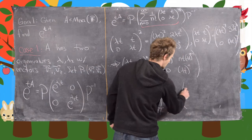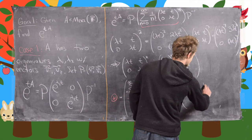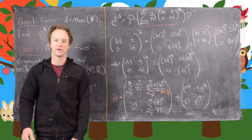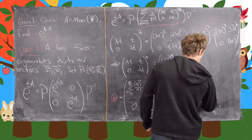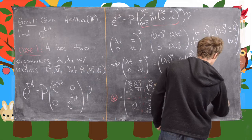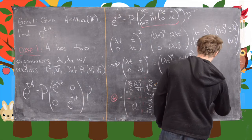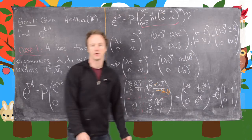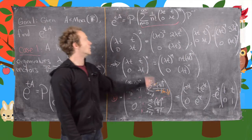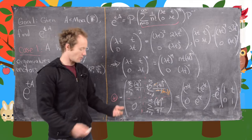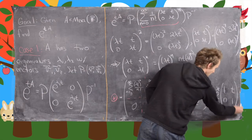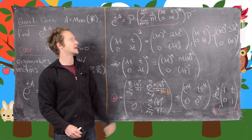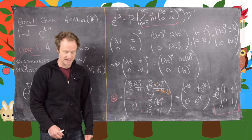So we have E to the lambda T, T E to the lambda T, 0, E to the lambda T. It's pretty common to factor out an E to the lambda T, and that gives us 1, T, 0, 1. So now we have a formula for E to the TA — we take this result and plug it into the spot in the formula at the top.